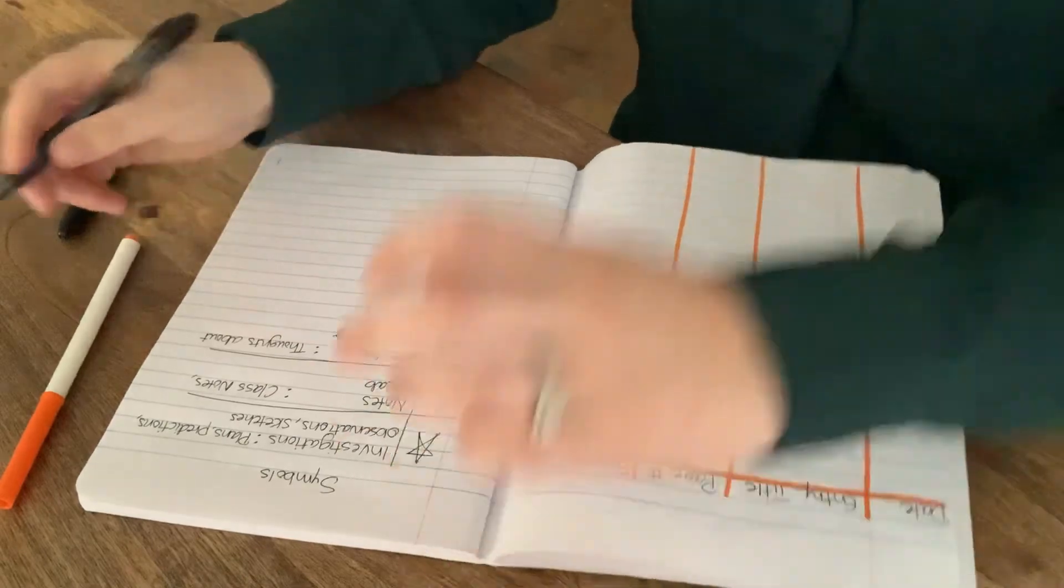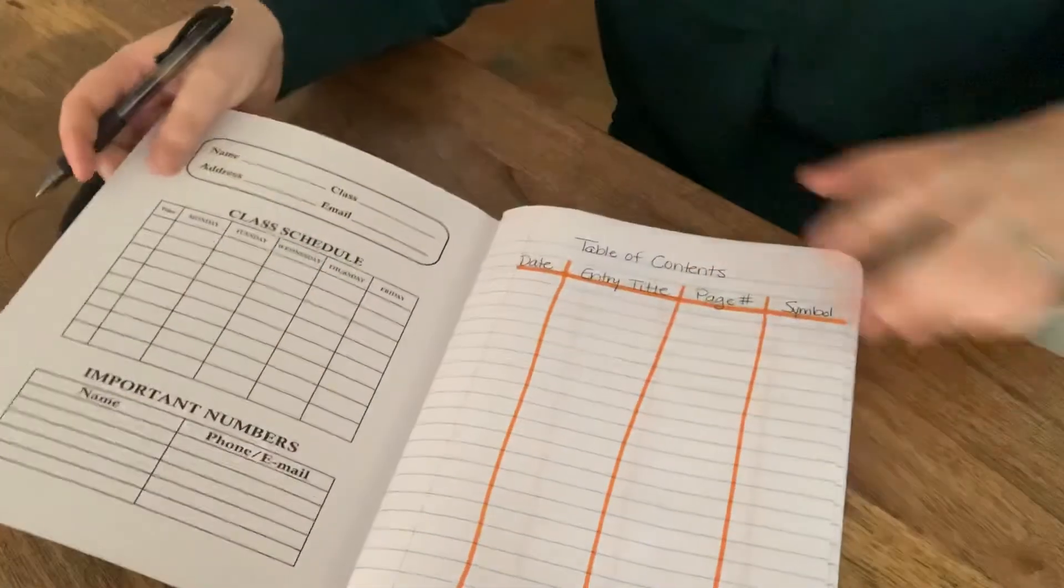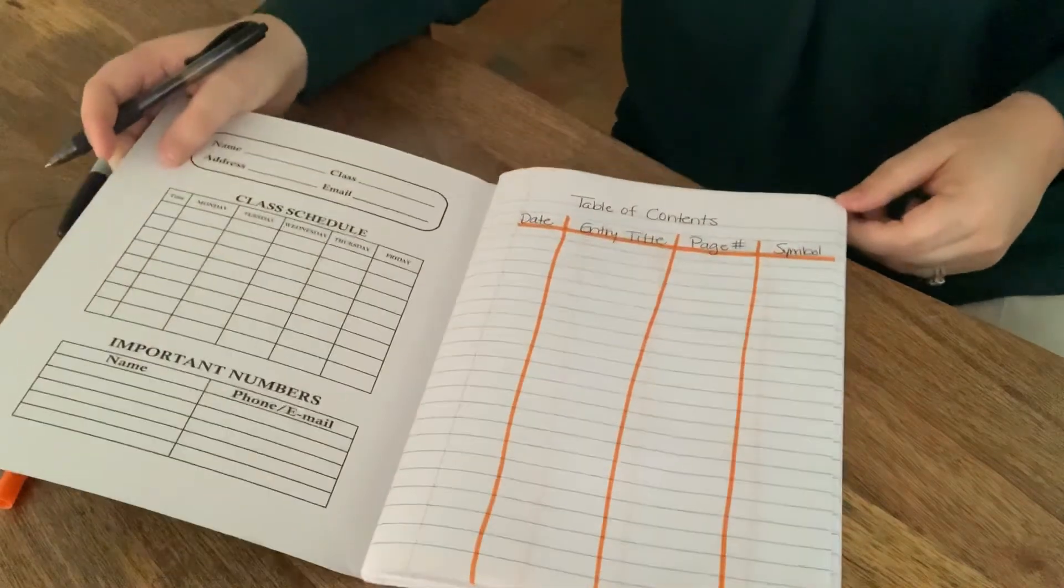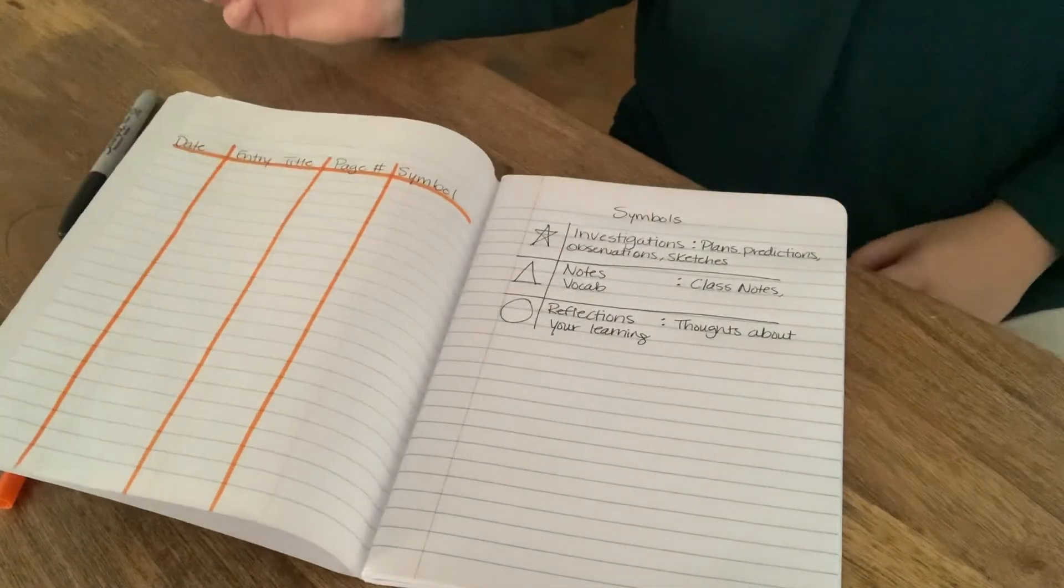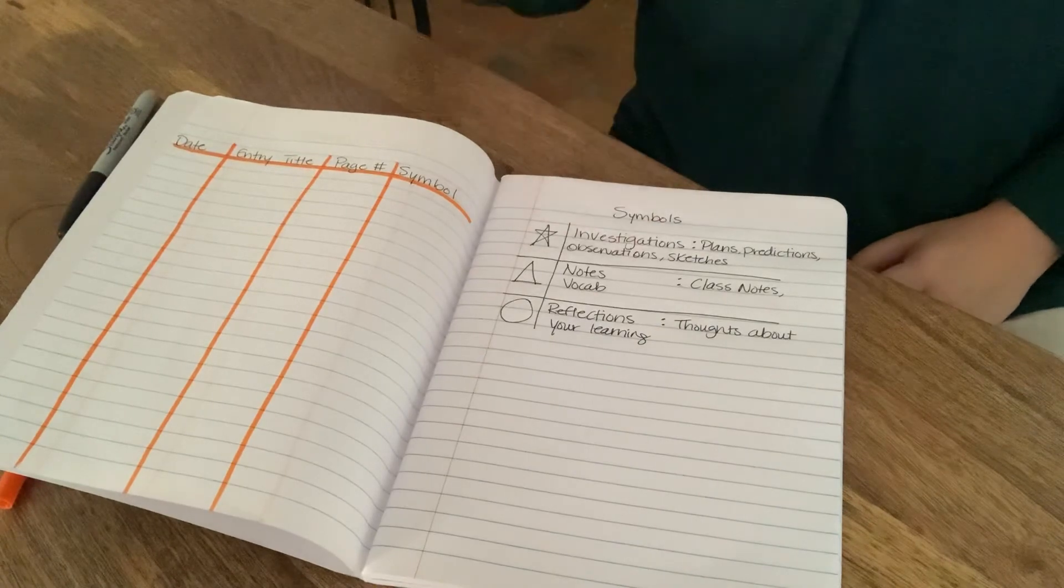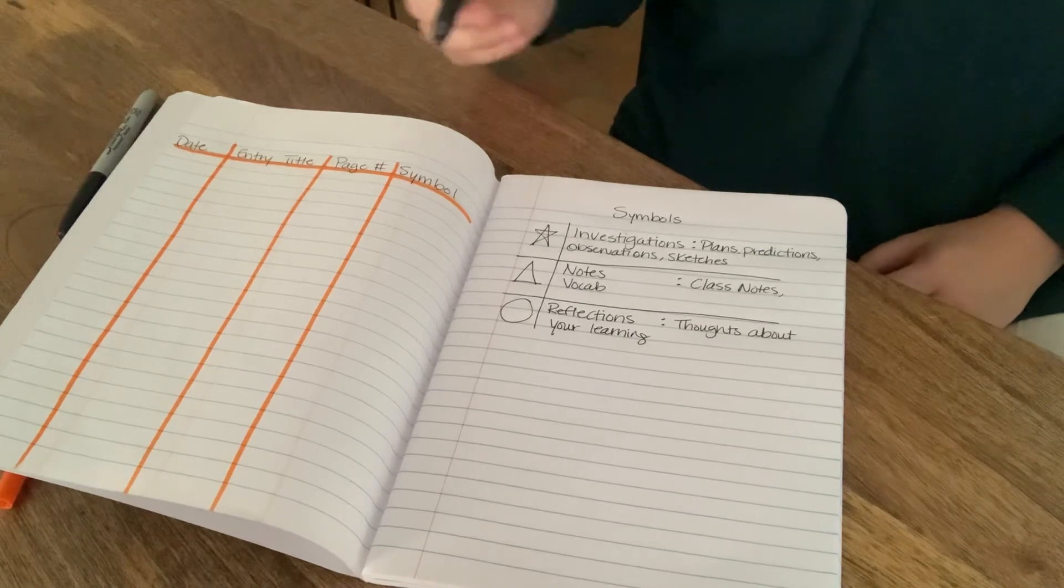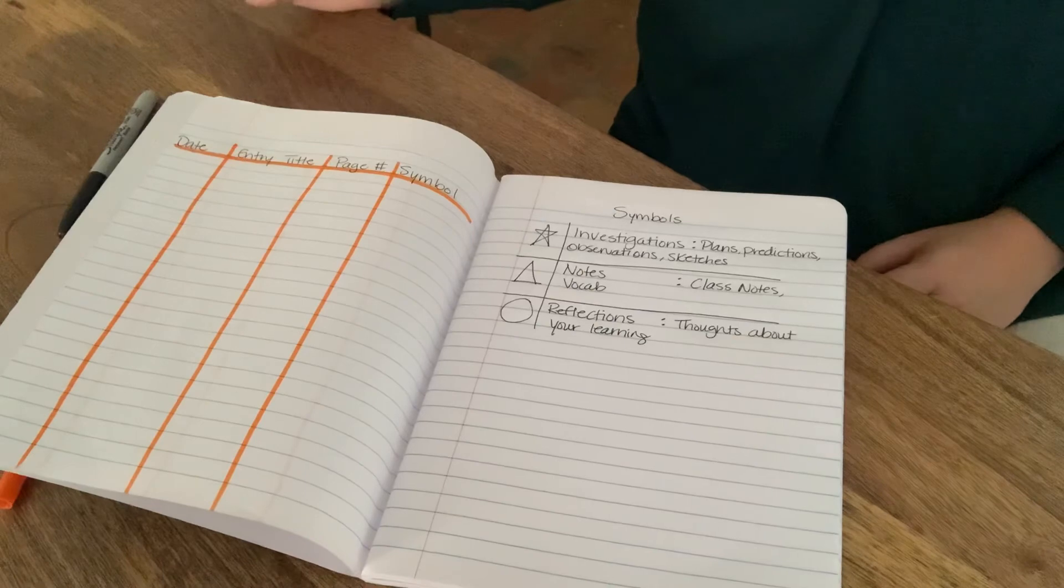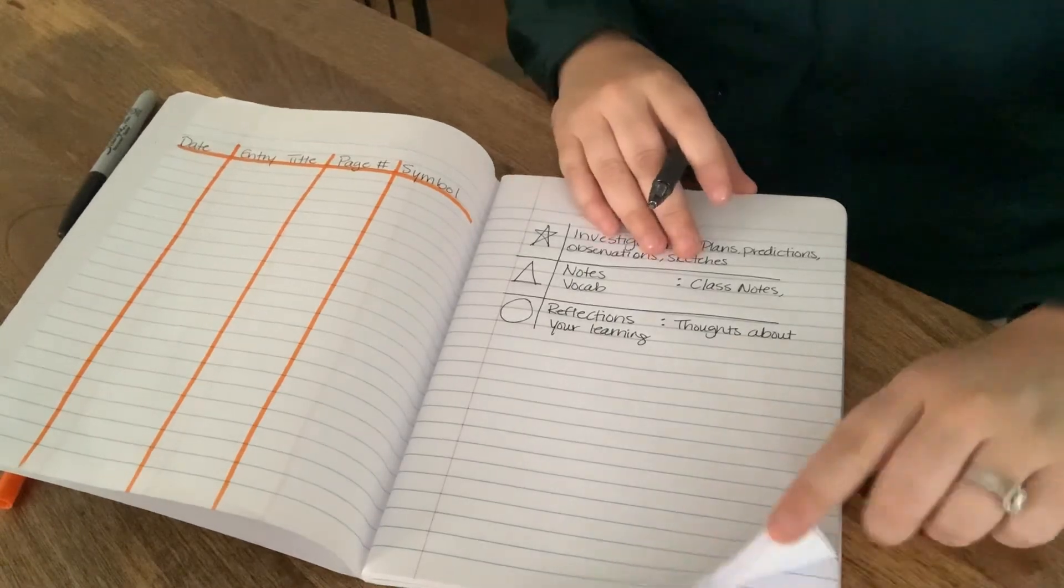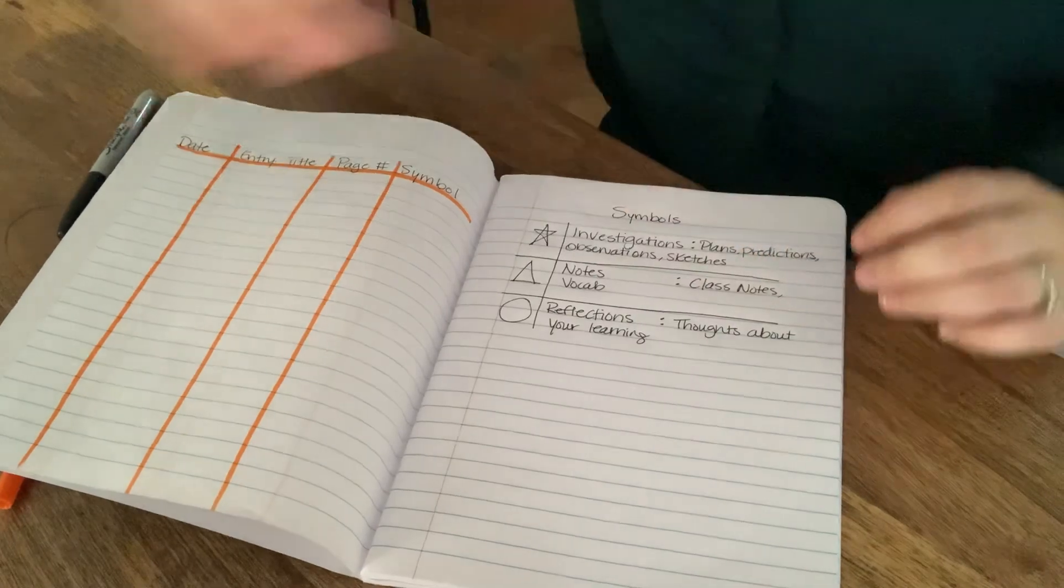So this is how your science journal should be set up. The very first page is the table of contents, and it is continued onto the back. And then the very first, next free page is the symbols key to let you know when you're using a symbol what your notes in your journal stand for. Make sure to also number your pages at the bottom of your journal. Thank you.